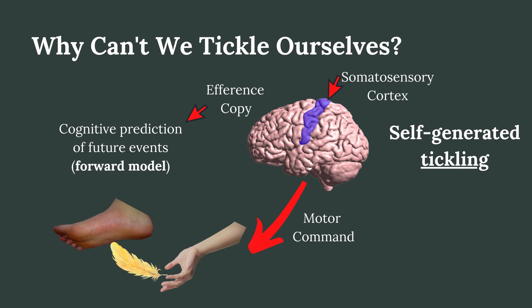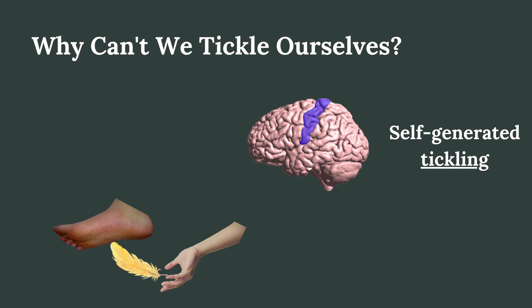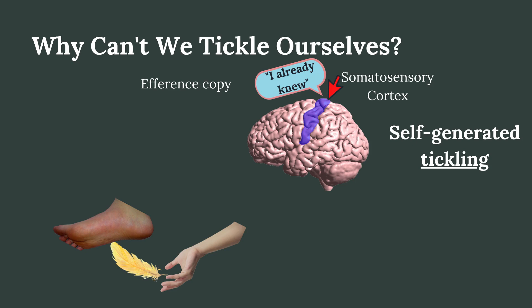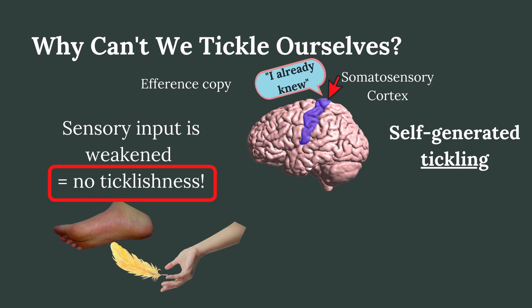When your tickling hand finally reaches your foot and you start tickling yourself, sensory receptors in your skin become activated. This sensory input then travels via sensory neurons to your somatosensory cortex. However, because this region has already received predictive information from the efferent copy about the tickling action, the sensory input is weakened. Because your brain already predicted that your foot will be tickled, the tactile stimulation will be felt, but the ticklishness won't. This is why we are unable to tickle ourselves.